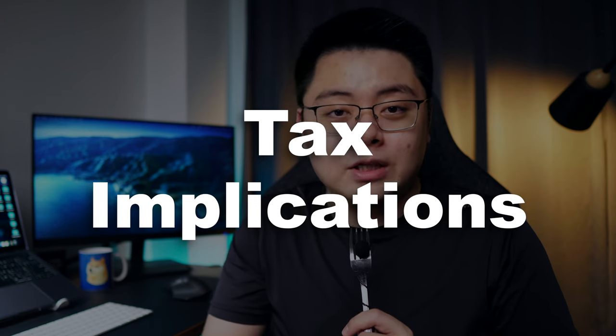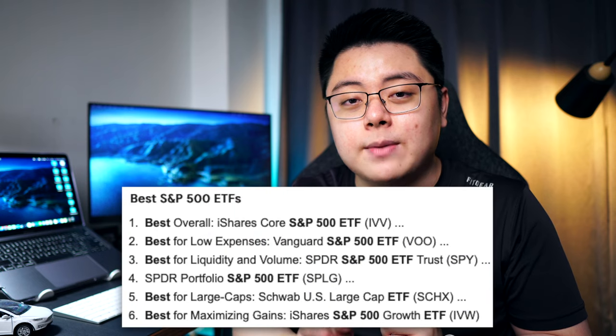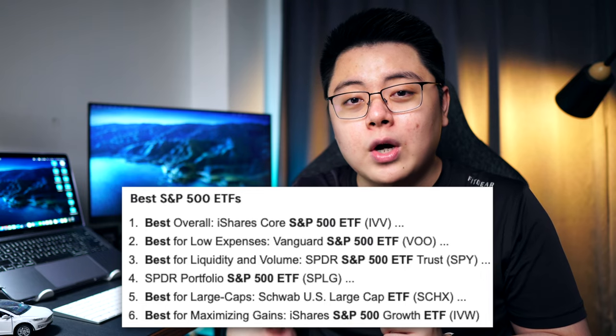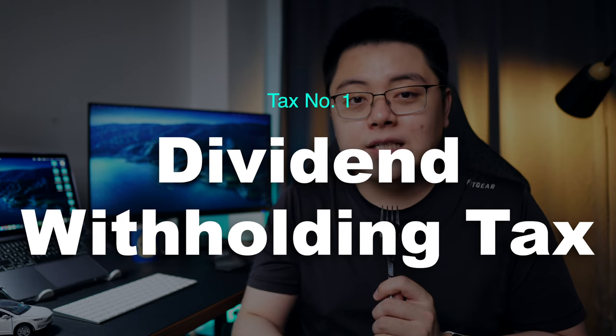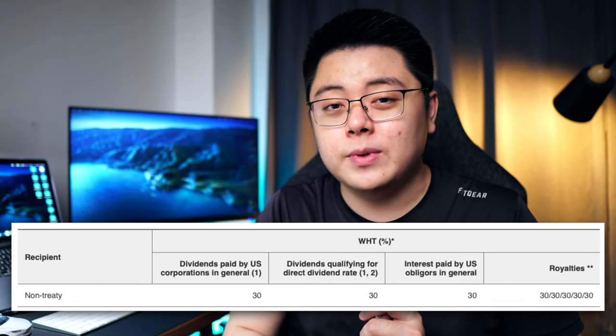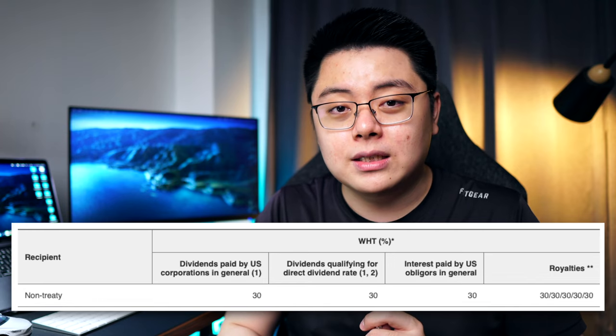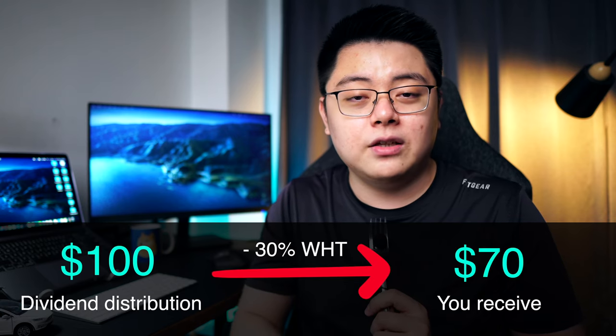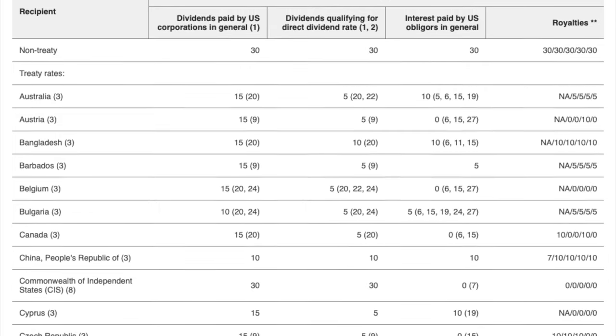Let's talk about the tax implications. If you want to invest in the popular S&P 500 ETFs you can find on Google — such as VOO, IVV and SPY — then you need to know that they are all US domiciled ETFs, meaning they are based in the United States. That means you will be imposed a few taxes by the US government because you are effectively owning assets in the US. The first tax is the dividend withholding tax. If you are a non-US resident, any dividends paid by US domicile ETFs or companies to you will be withheld by 30%. For example, if the US ETF pays you $100 of dividends, then you are only effectively receiving $70 of it. A small exception here: if you are from a country that has a tax treaty benefit with the United States, then your withholding tax will be reduced by a little bit.